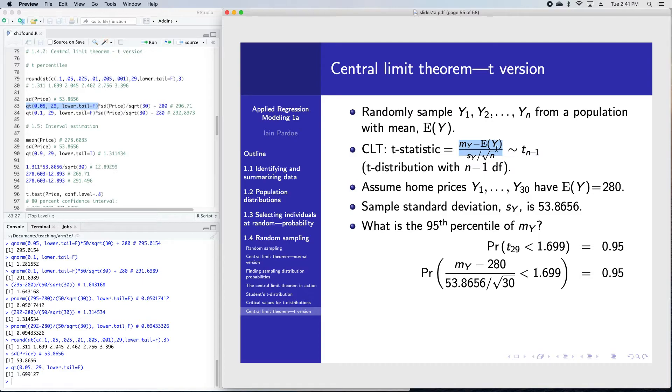Then I substitute what t29 is using this. It's sample mean minus the population mean, and that's coming from this assumption here. Then divided by the sample standard deviation over square root of n.